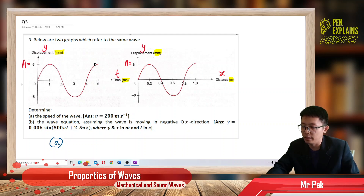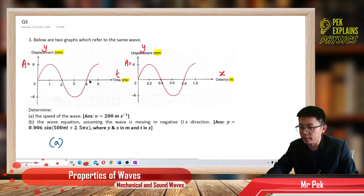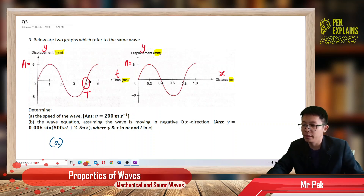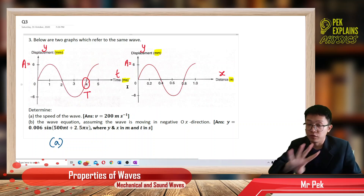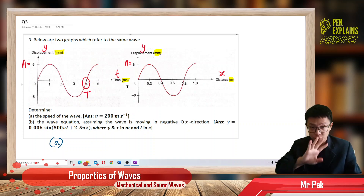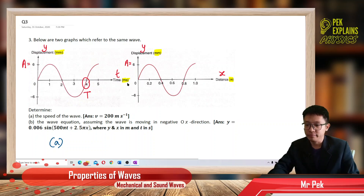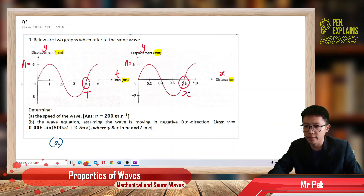For both graphs, amplitude is six millimeter. And then from the y versus t graph, you can find the period — period is one complete oscillation. This one here is the period. How long is the period? Not four seconds — it's four millisecond.